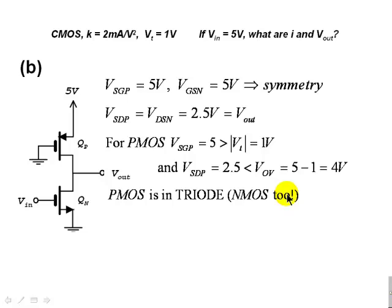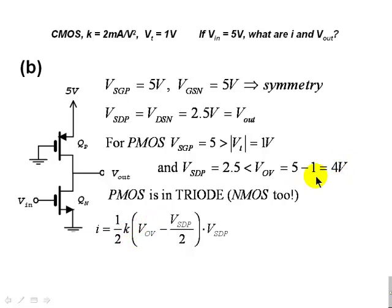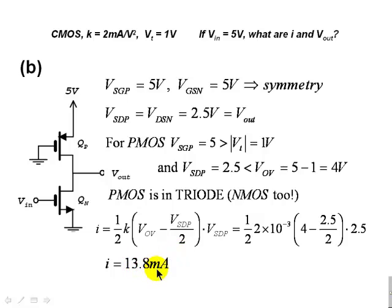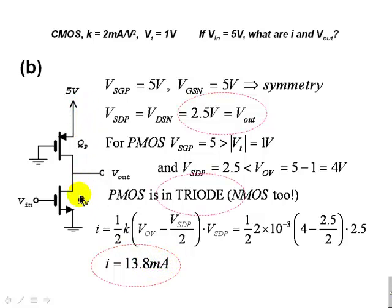We use the triode formula for the current. The current is 1.5K times the overdrive voltage (4V) minus VSD/2, times VSD = 2.5V. Computing that gives a current of 13.8 mA. So for Part B: Vout = 2.5V, both transistors are in triode mode, and the drain current in both is 13.8 mA. We are done with Part B.